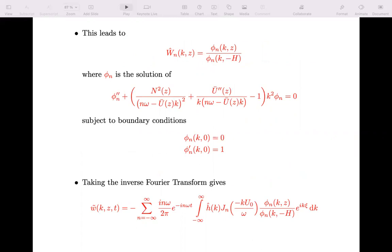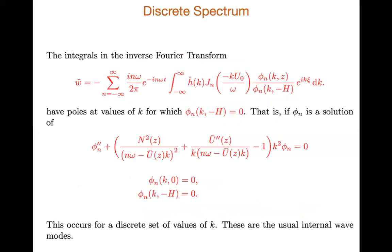Because of the background current, we've got division by n-omega — the nth harmonic of the tidal frequency. So the tidal current has frequency omega and it's going to generate waves with all the harmonics, and omega is up to equal to the buoyancy frequency. We've got this eigenvalue problem subject to two surface conditions: phi-n of k and zero equals zero, and phi-n-prime of k and zero equals one.